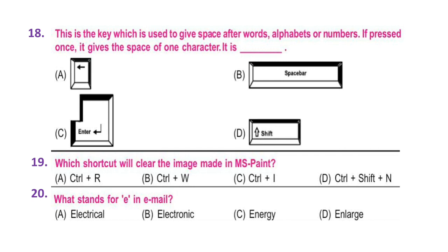Question 18: This is the key which is used to give space after words, alphabets and numbers. If pressed once, it gives the space of one character. Look at the options, select your answer carefully and write it down. Question 19: Which shortcut will clear the image made in MS Paint? Think about the answer and write it down. Question 20: What stands for E in email? A. Electrical, B. Electronic, C. Energy, or D. Enlarge.